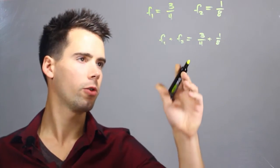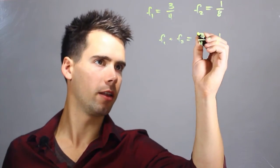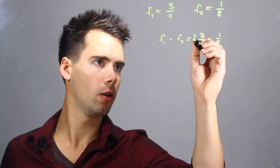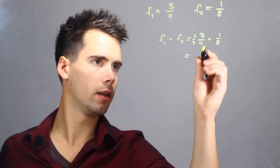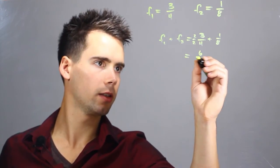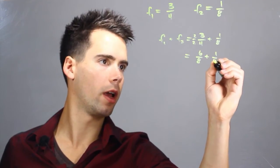In order to add these properly we have to match the denominators. So we can multiply the F1 term by 2 over 2 and we find that F1 plus F2 is simply equal to 6 over 8 plus 1 over 8.